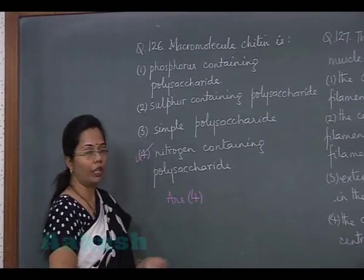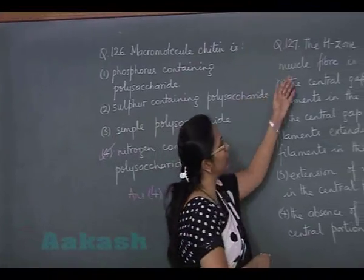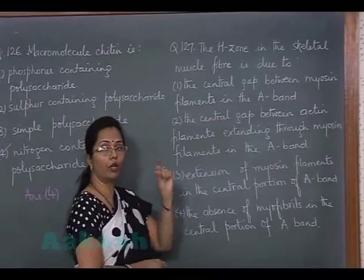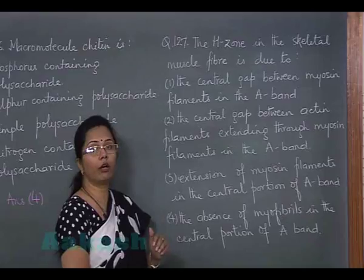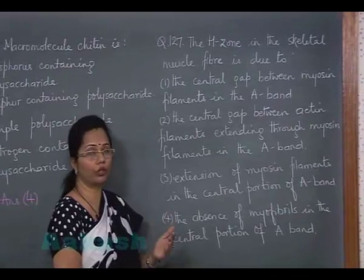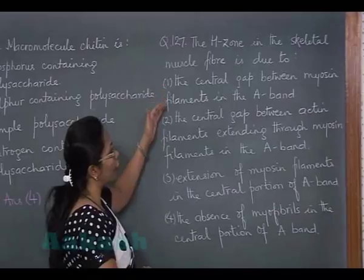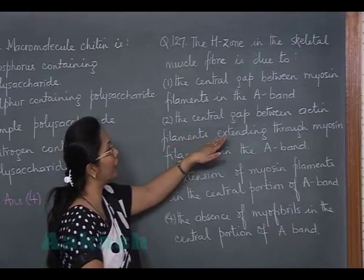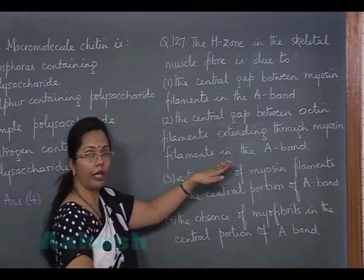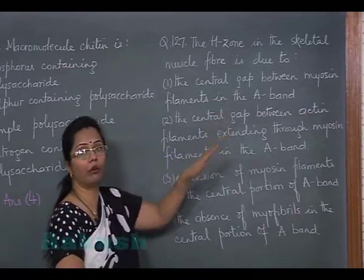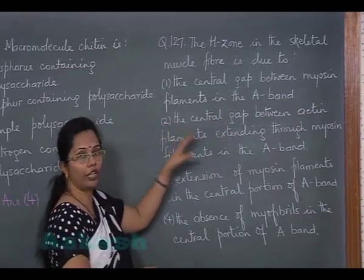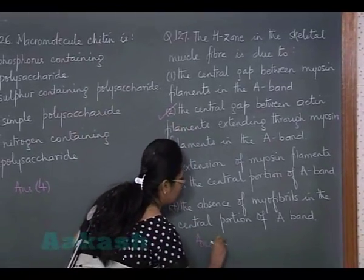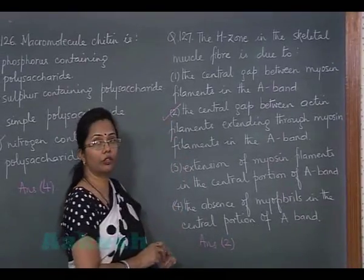Moving on to question 127: the H zone, or Hensen's zone, in the skeletal muscle fiber. This is a light-colored zone where the actin filaments are not overlapping over the myosin filaments. It is the central gap between the actin filaments extending through myosin filaments in the A band — a gap where actin filaments are not present. So the answer is option 2.